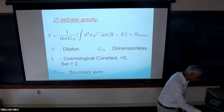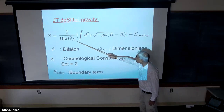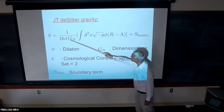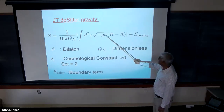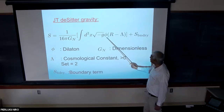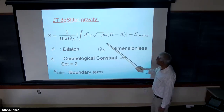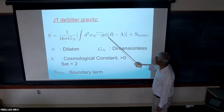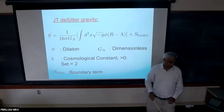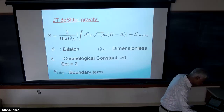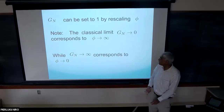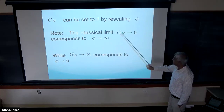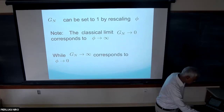g_Newton plays the role of ℏ — it sits in the denominator, and the classical limit is g_Newton going to zero. Equivalently, since you could put g_Newton in the action, it's really ϕ/g_Newton going to infinity. So another way to say it is ϕ can go to infinity. I'll often just set g_Newton to one, and then the classical limit will be ϕ going to infinity.